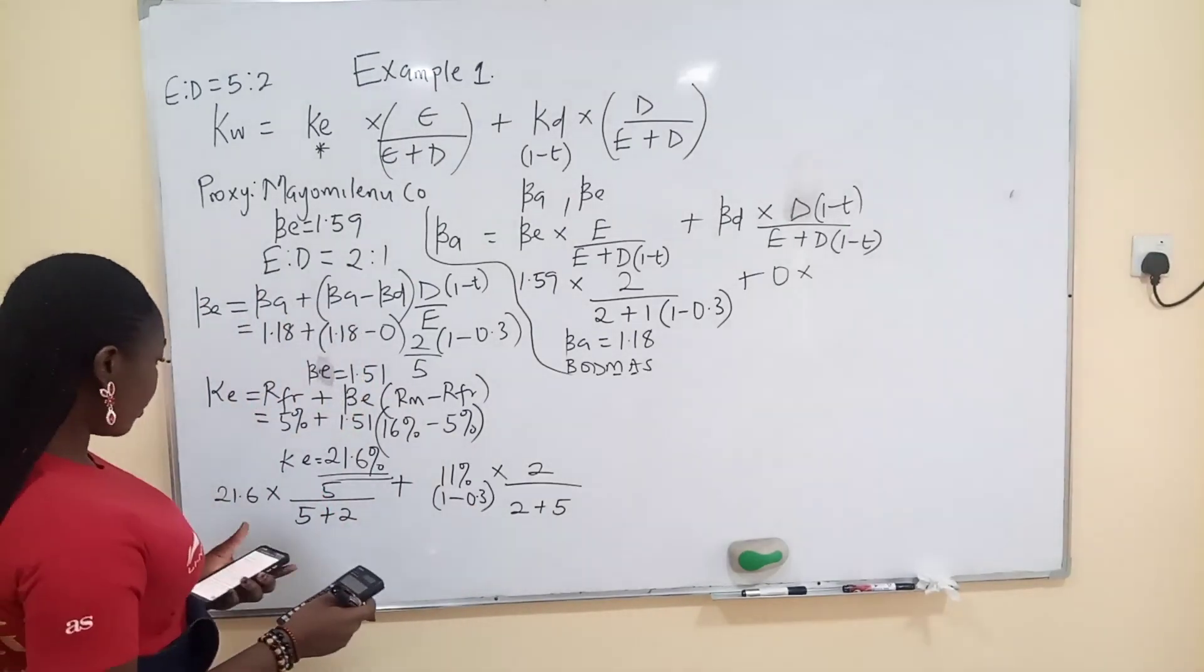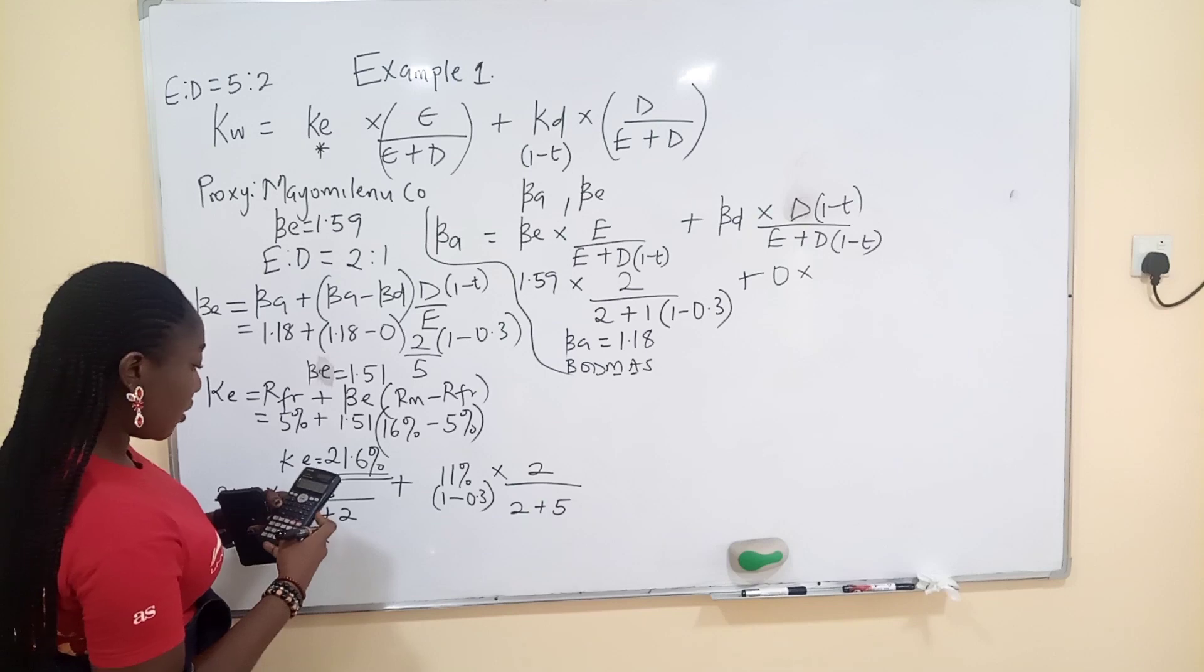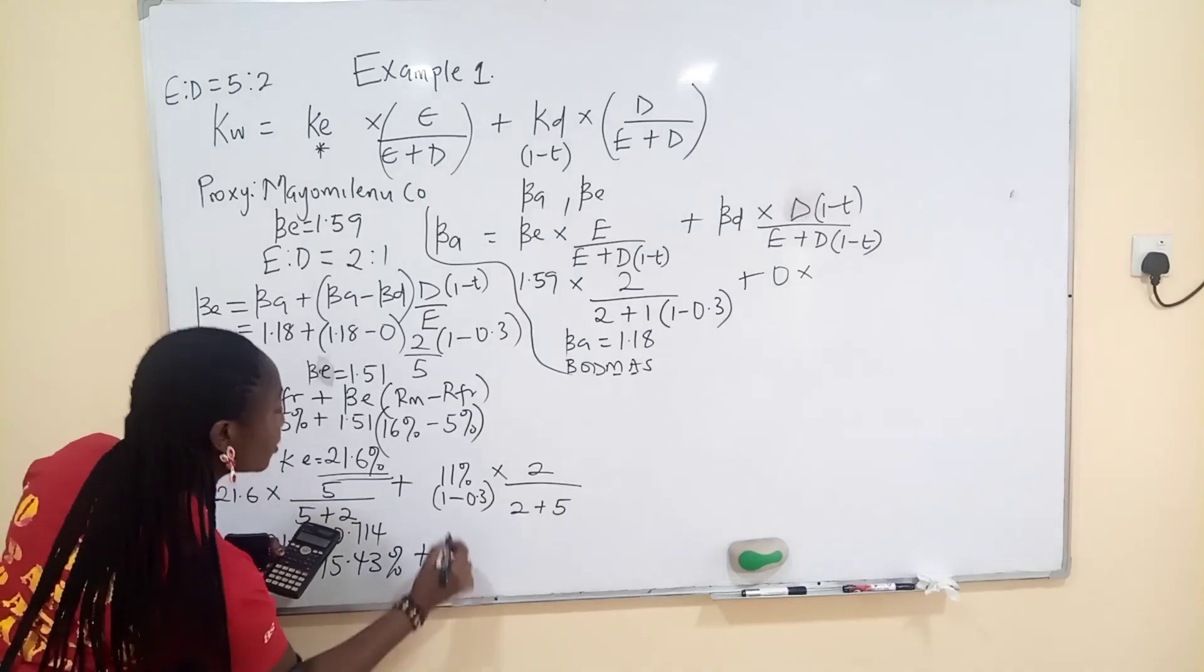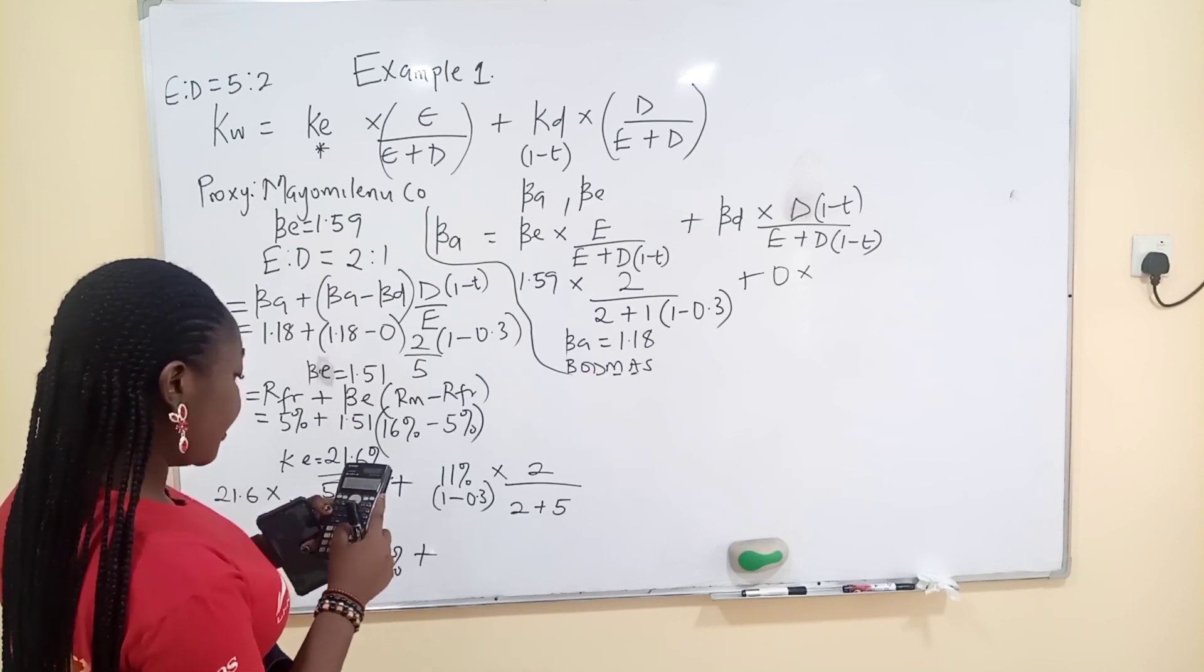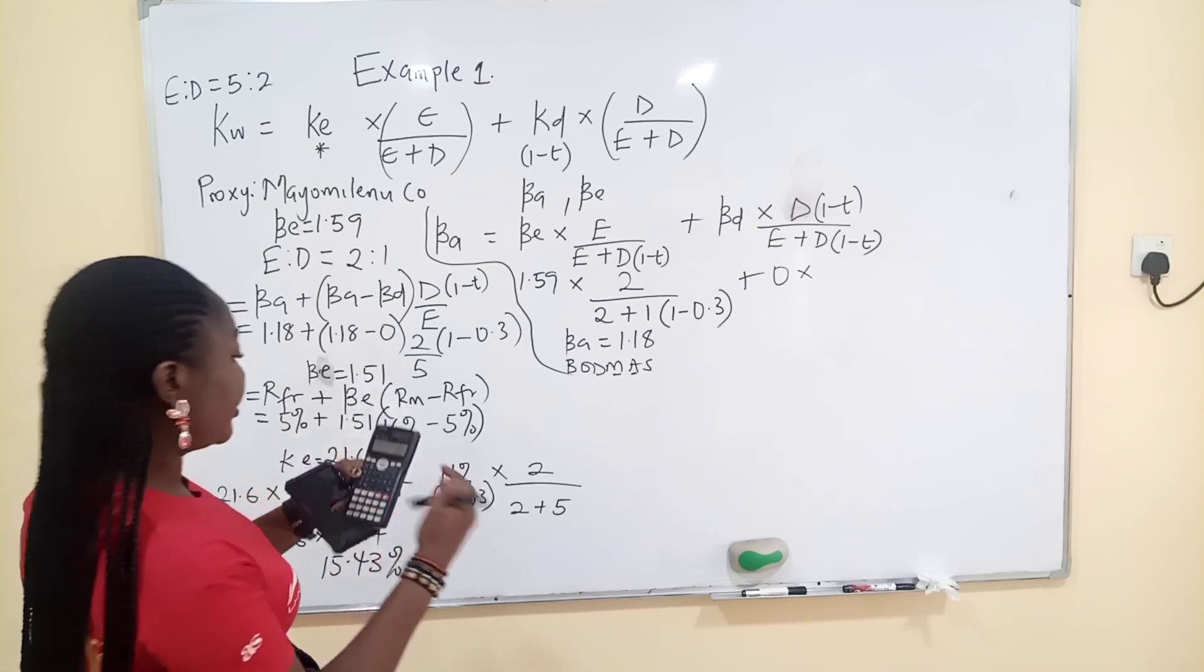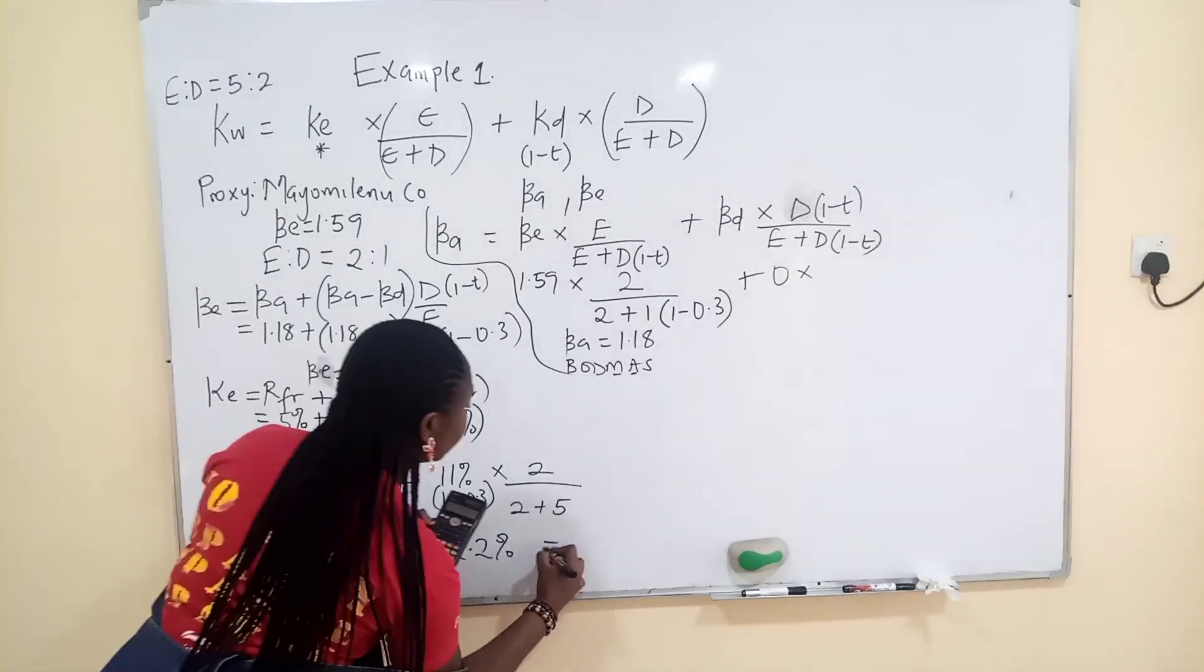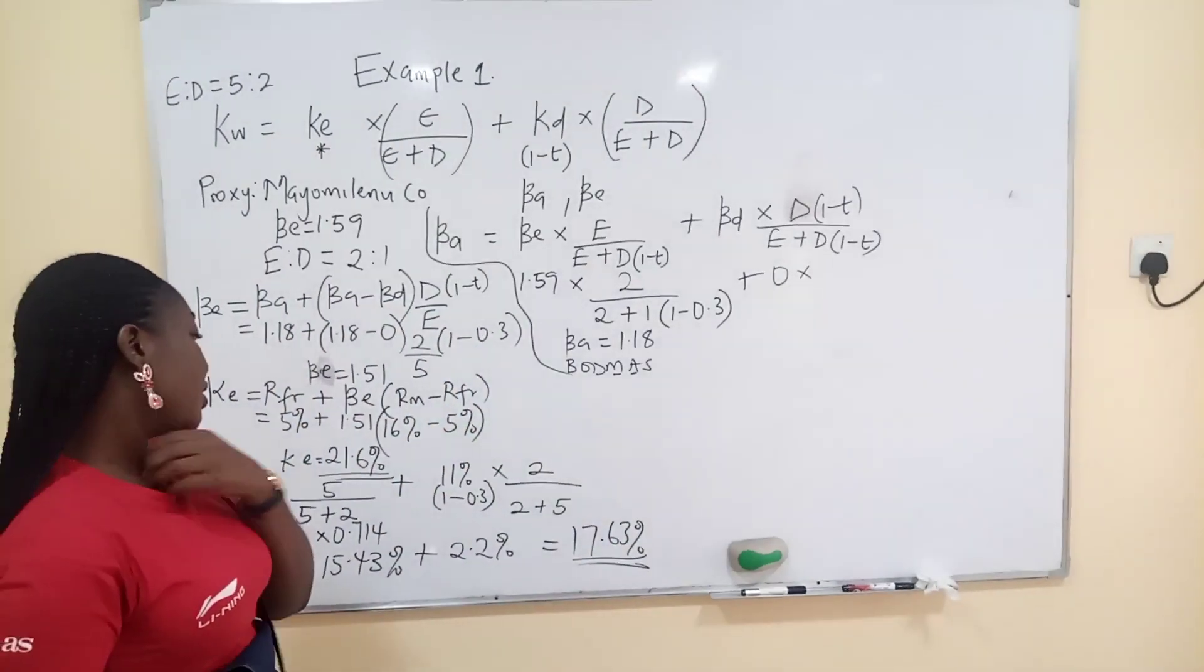Now let's solve. Let's do this in our calculator. What you have is 21.6 times 5 divided by 7. 0.714 times 21.6, that's 15.43% plus, we do here 2 divided by 7 times, I can do the brackets here, 11% times 0.7, brackets. That gives us 2.2%. So 2.2% plus 15.43 that gives me 17.63%. So your WACC is 17.63%.